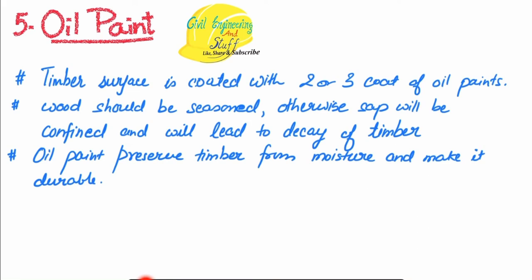The next variety of preservative is oil paint. Coating the timber surface with 2 to 3 coats of oil paint makes it safe from moisture attack. One important thing to note is that the timber surface to be oil painted for preservation should be well seasoned. If the wood is not well seasoned, rotting or sap issues will occur, leading to the early decay of the timber. Oil paints are very good in terms of resistance towards moisture.